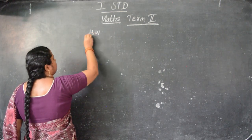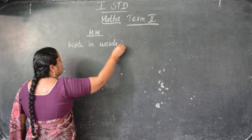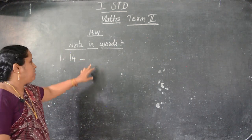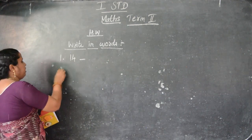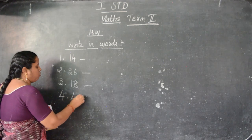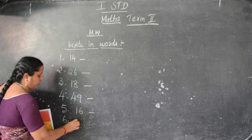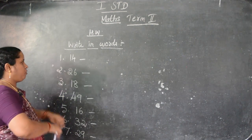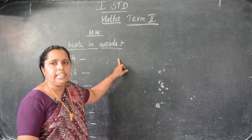Homework. First one - write numbers in spelled letters. 14 - what is the spelling? F-O-U-R-T-E-E-N. Like that you have to write. Then second one: 26, 18, 49, 16, 32, 29. For all of these you have to write spellings. 14 - F-O-U-R-T-E-E-N.